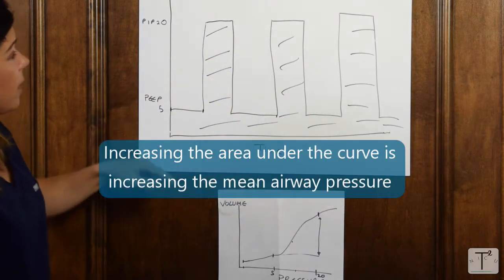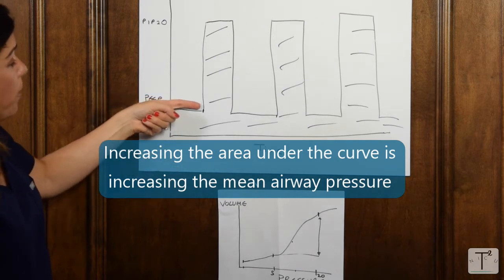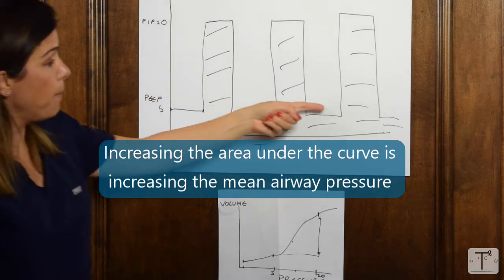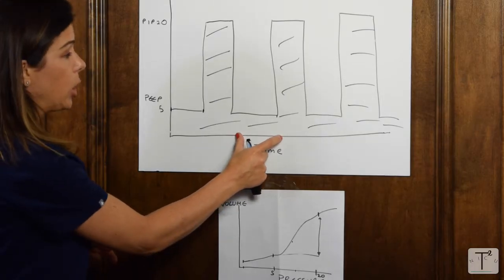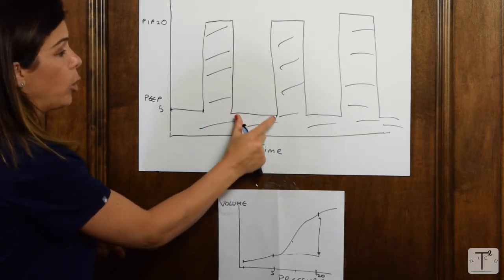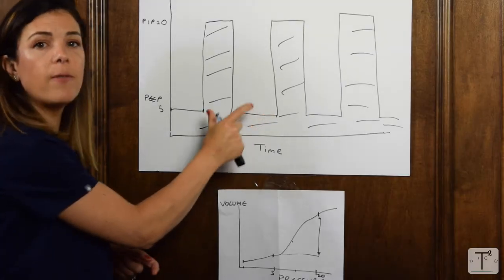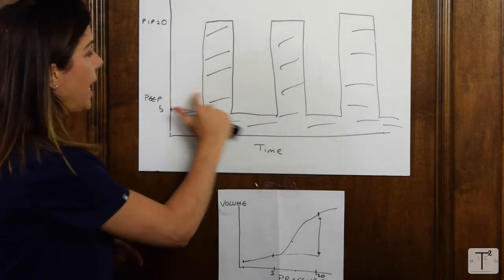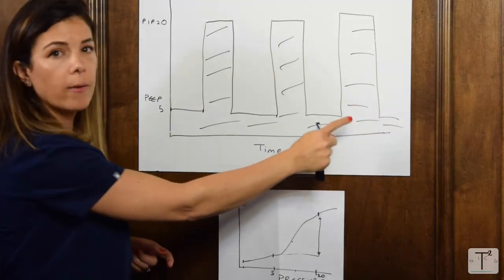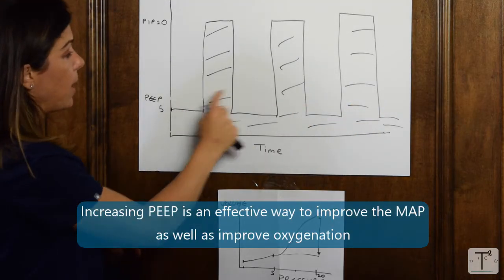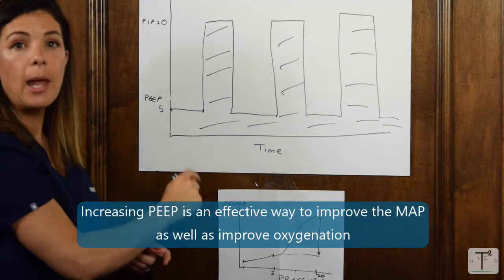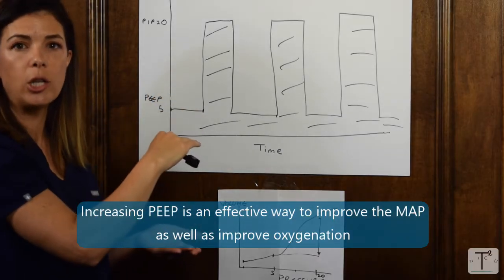The first thing that you could do, you could go up on the PEEP. If you think about it, because you spend longer in expiration than in inspiration, so your E time is longer than your I time, going up on the PEEP is a very effective way to increase the area under the curve. Going up on the PEEP is a very effective way to improve your mean airway pressure and therefore your oxygenation.